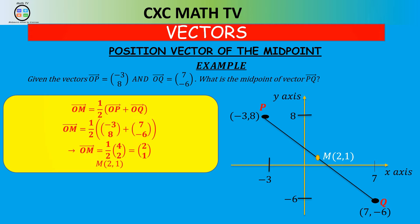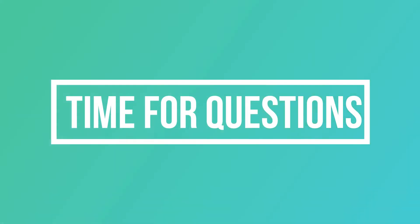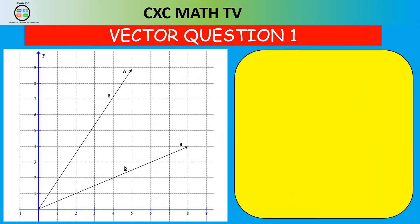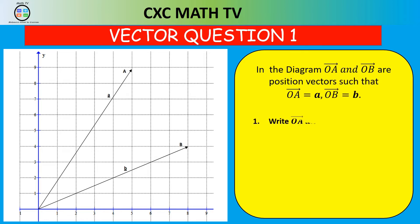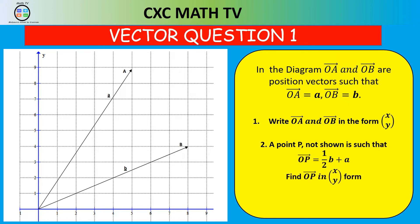Let's look at some examples involving position vectors, displacement vectors, and the midpoint of vectors. In the diagram, OA and OB are position vectors such that OA = a and OB = b. Write vector OA and vector OB in column vector form. Part two: point P is such that vector OP = ½(b + a); find vector OP in column vector form. Part three: determine the magnitude of vector OP.